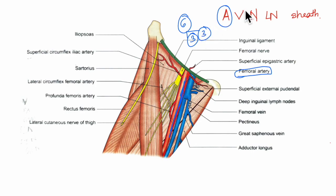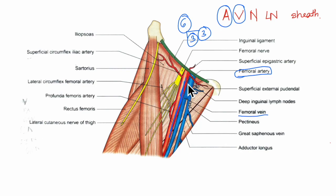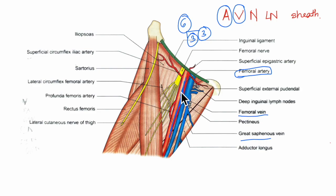The next content is the femoral vein and its tributaries. The femoral vein accompanies the femoral artery, lying medial to it. The femoral vein is medial to the artery at the base of the triangle and posteromedial to the artery at the apex. It receives the great saphenous vein, the circumflex veins, and other veins corresponding to the branches of the femoral artery.